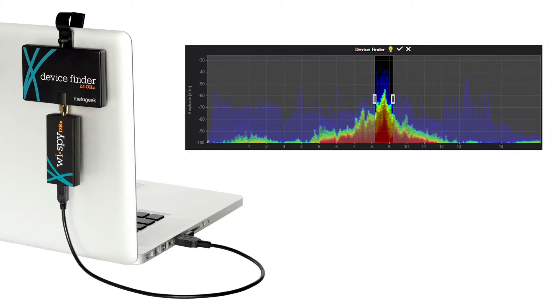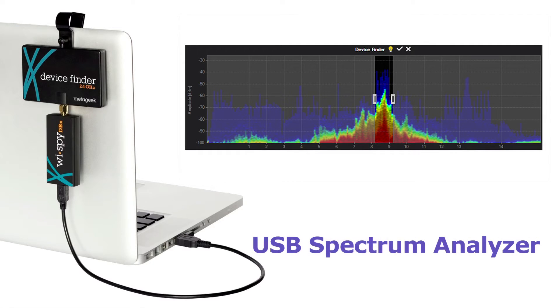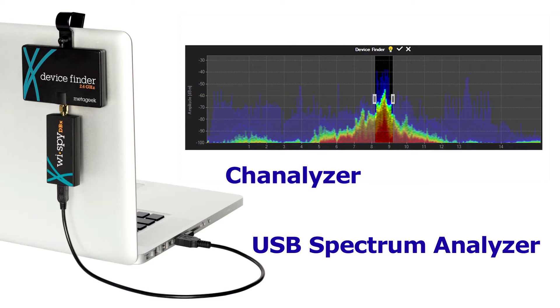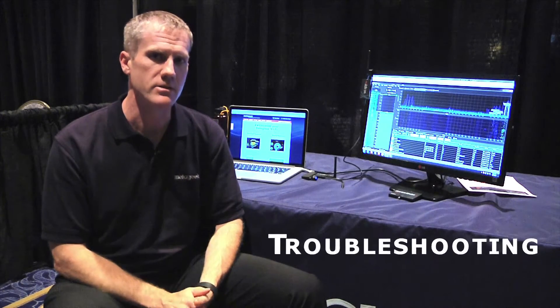The products that we make are really around Wi-Fi tools and the Wi-Fi spectrum, so you're looking at 2.4 and 5 gigahertz. We provide both software and hardware. The hardware is a USB spectrum analyzer that allows you to collect the raw RF for your systems. And we also have applications like Channelizer, which takes that RF data and processes it. That allows you to design a network, maintain the network, and also troubleshoot that same network.